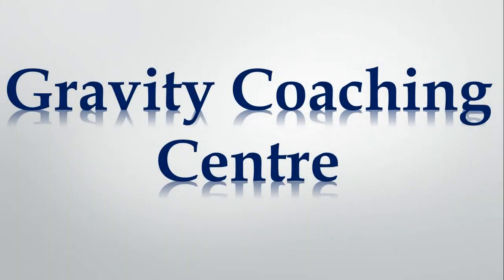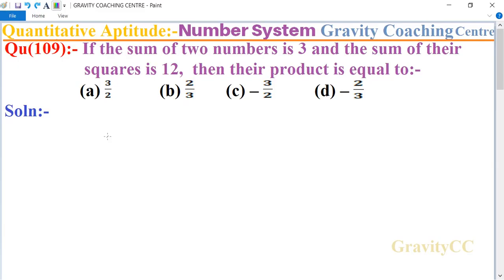Welcome to our channel Gravity Coaching Center. Quantitative Aptitude, chapter Number System, question number 109. If the sum of two numbers is 3 and the sum of their squares is 12, then their product is equal to which option?